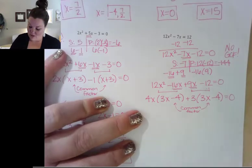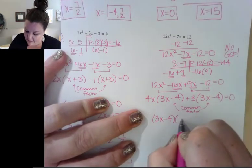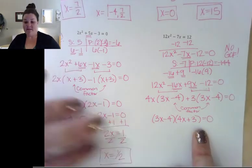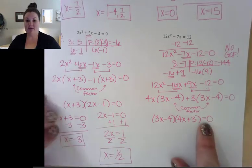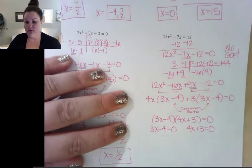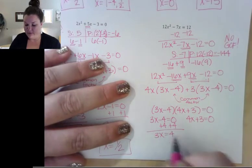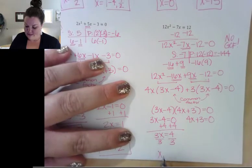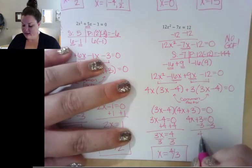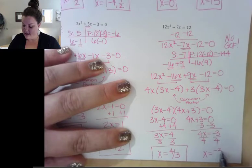Since both groups have x plus 3 — wait, 3x minus 4 — as the common factor, I take that out. What's left from the first term is 4x, and from the second term is positive 3. So it's fully factored: (3x minus 4)(4x plus 3) equals 0. Setting each factor equal to 0: for the first, 3x equals 4, so x equals 4 thirds. For the second, 4x equals negative 3, so x equals negative 3 fourths.